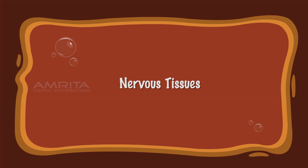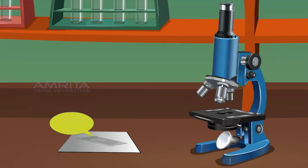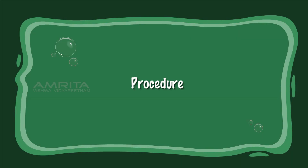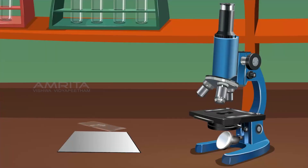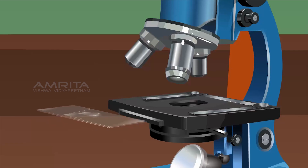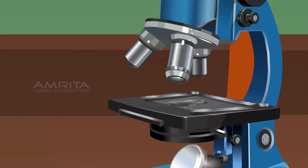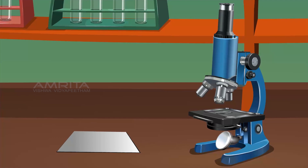Nervous tissues. Materials required: prepared slide of nerve tissue and a compound microscope. Procedure: Place the prepared slide of the nerve tissue on the stage of the compound microscope. Observe the features of the nerve tissues through the lens of the compound microscope.